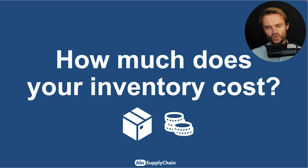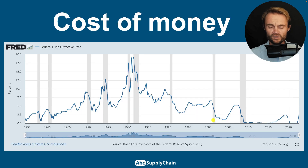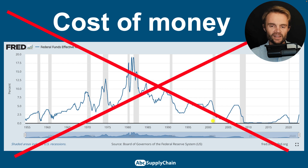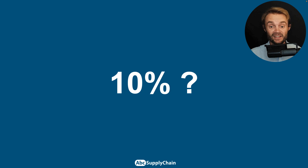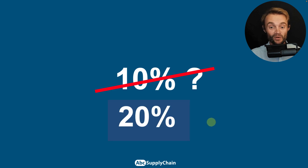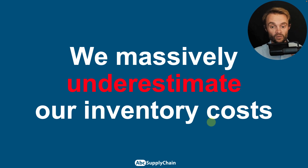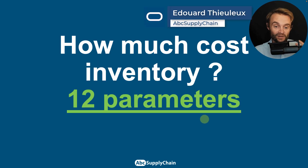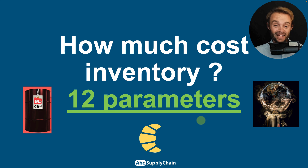How much does your inventory cost? With the cost of money, maybe 3%? With storage, maybe 5% or 10%? In this video I'm going to give you 12 parameters to calculate the real cost of your inventory, and I can tell you we massively underestimate our inventory costs. I'm going to use examples with oil, a planet, and croissants — yes, croissants.